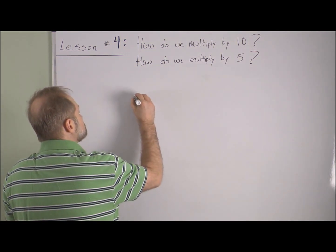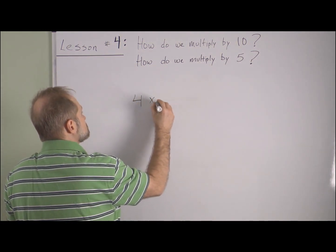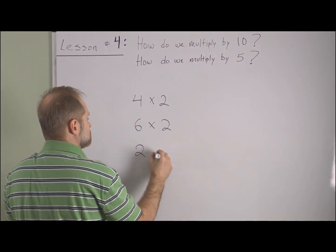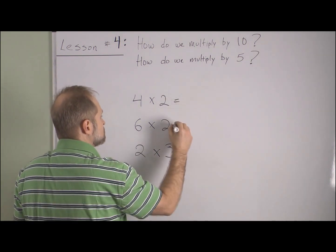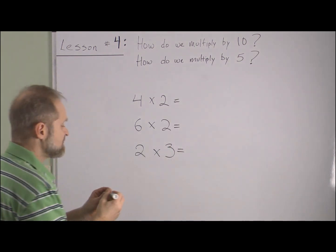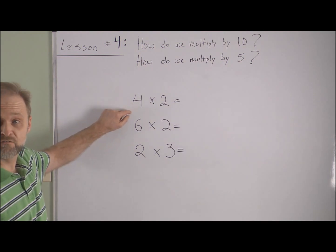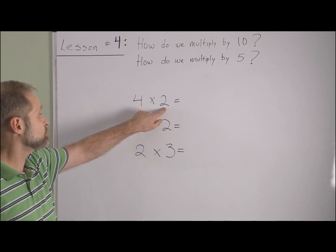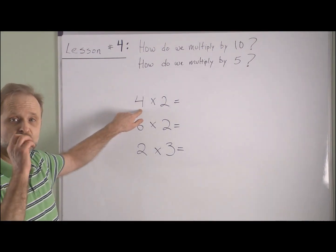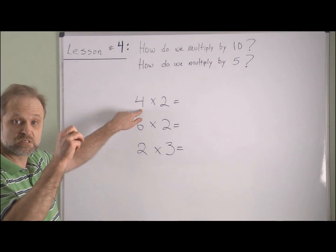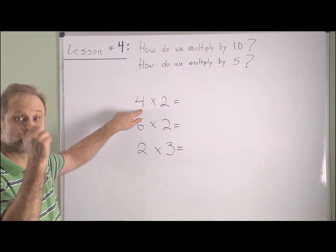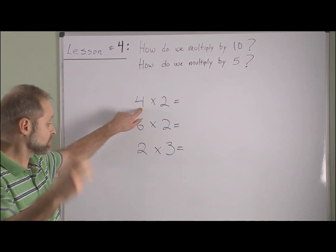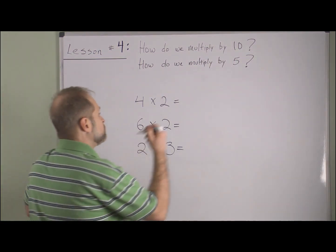Suppose we have this. Let's take a look at the very top fact: four groups of two. Because we have a two here, what we need to do is skip count to the fourth number in the skip counting sequence. That means we're going to go two, four, six, eight — that's the fourth number right there. So four times two will be eight.